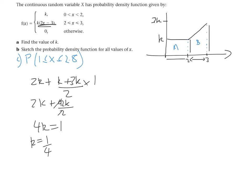The second part asks us to sketch the probability density function for all values of x. So instead of k, we can just write 1 quarter, and 3k is going to be 3 quarters. And so we've also sketched the probability density function.